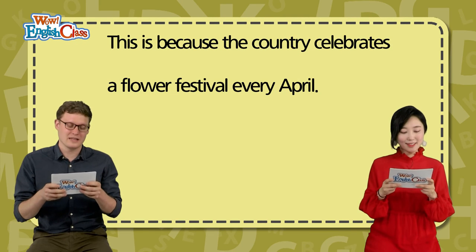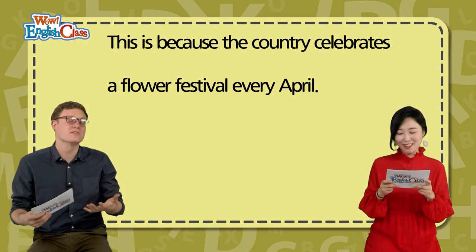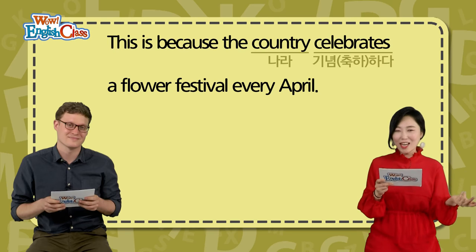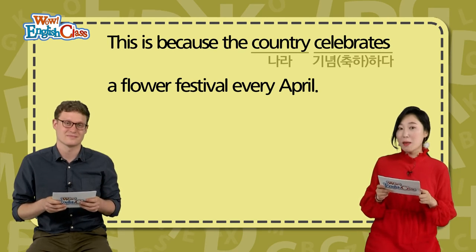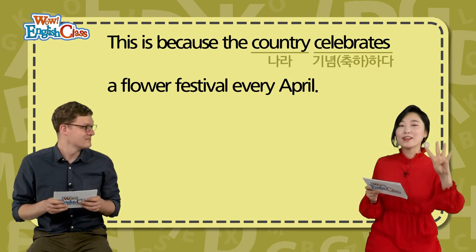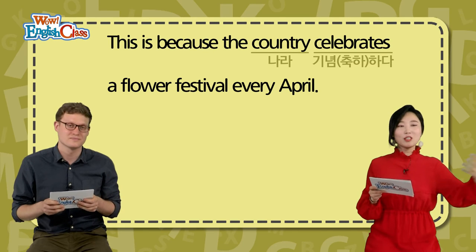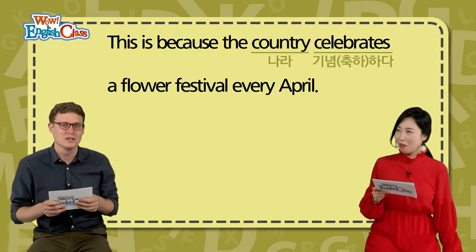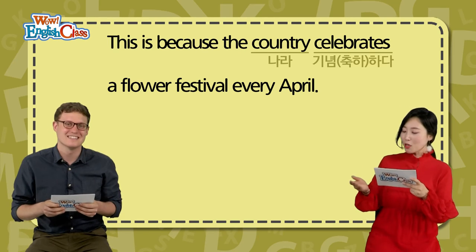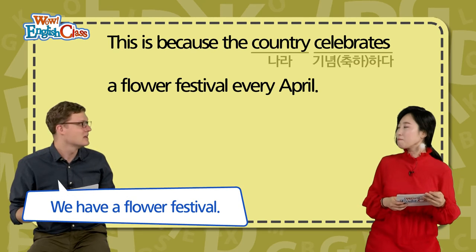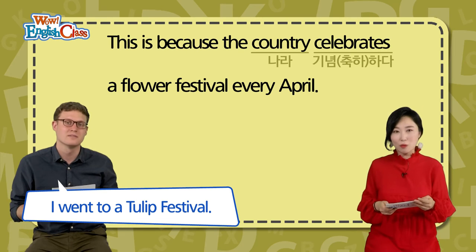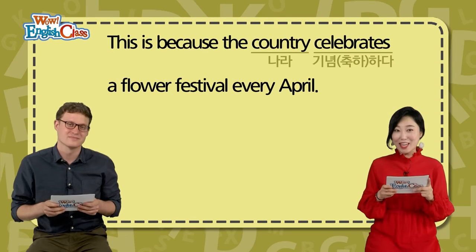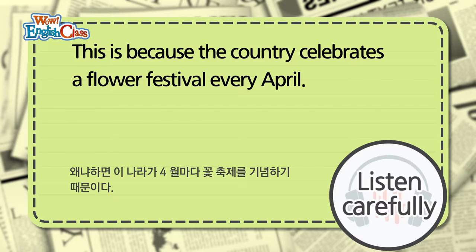Next: This is because the country celebrates a flower festival every April. This is because — 이것은 왜냐면요, the country(포르투갈이 되겠죠?)가 celebrate — 축하하기 때문이에요. A flower festival — 꽃축제를요, every April — 매 4월마다. 우리나라도 매 4월마다 꽃축제가 전국에서 열리거든요. 미국에서도 tulip festival이 있어요. This is because the country celebrates a flower festival every April.